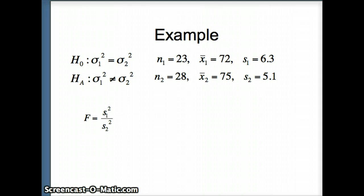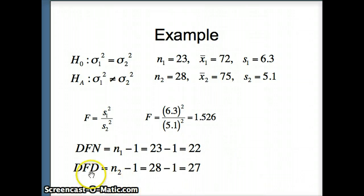So F is going to be S1 squared divided by S2 squared, 6.3 squared divided by 5.1 squared. And that number comes out to 1.526. Our degrees of freedom of the numerator, so 6.3 corresponded to this N, 23 minus 1, 22. And the degrees of freedom of the denominator corresponded to this N, 28 minus 1, 27 is the degrees of freedom of the denominator.